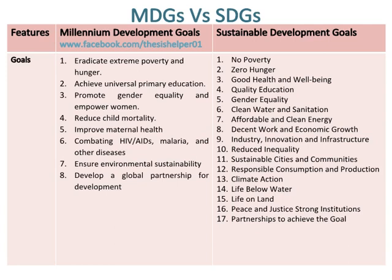Whereas, there are 17 goals of SDGs. Goal 1 is No Poverty. Goal 2 is Zero Hunger. Goal 3 is Good Health and Well-Being. Goal 4 is Quality Education. Goal 5 is Gender Equality. Goal 6 is Clean Water and Sanitation. Goal 7 is Affordable and Clean Energy. Goal 8 is Decent Work and Economic Growth. Goal 9 is Industry, Innovation and Infrastructure. Goal 10 is Reduced Inequality. Goal 11 is Sustainable Cities and Communities.